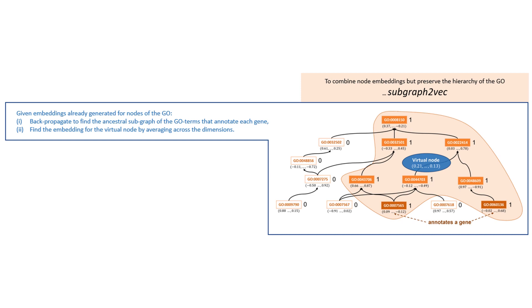Given this, we now propose a method subgraph-to-vec. This aims to combine node embeddings that have been generated and also preserve the hierarchy of the directed acyclic graph, in this case the gene ontology. So given a previously generated set of embeddings for each term in the gene ontology, and given a set of gene ontology annotations for each gene, we want to combine the GO term embeddings and yet preserve this hierarchy, hence subgraph-to-vec.